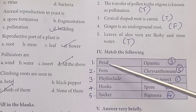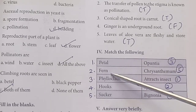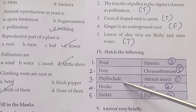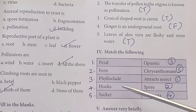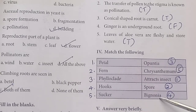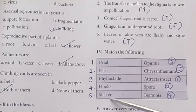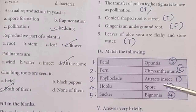Match the following: Petal — Attract insects. Fern — Spore. Pyrolade — Arbutus. Hooks — Bignonia. Sucker — Chrysanthemum.